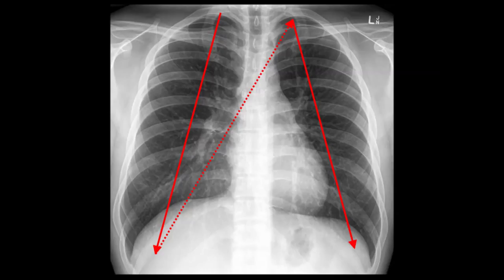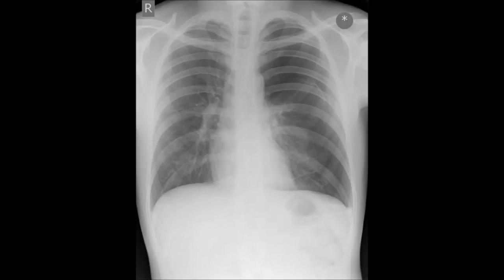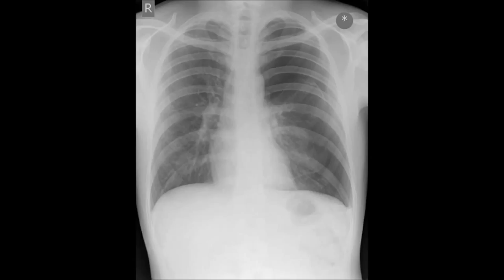Compare left to right. Firstly, see if there are any areas where normal lung markings are absent, as this may indicate collapse or pneumothorax. This patient has a left-sided pneumothorax — I've outlined the area where the lung markings are absent.